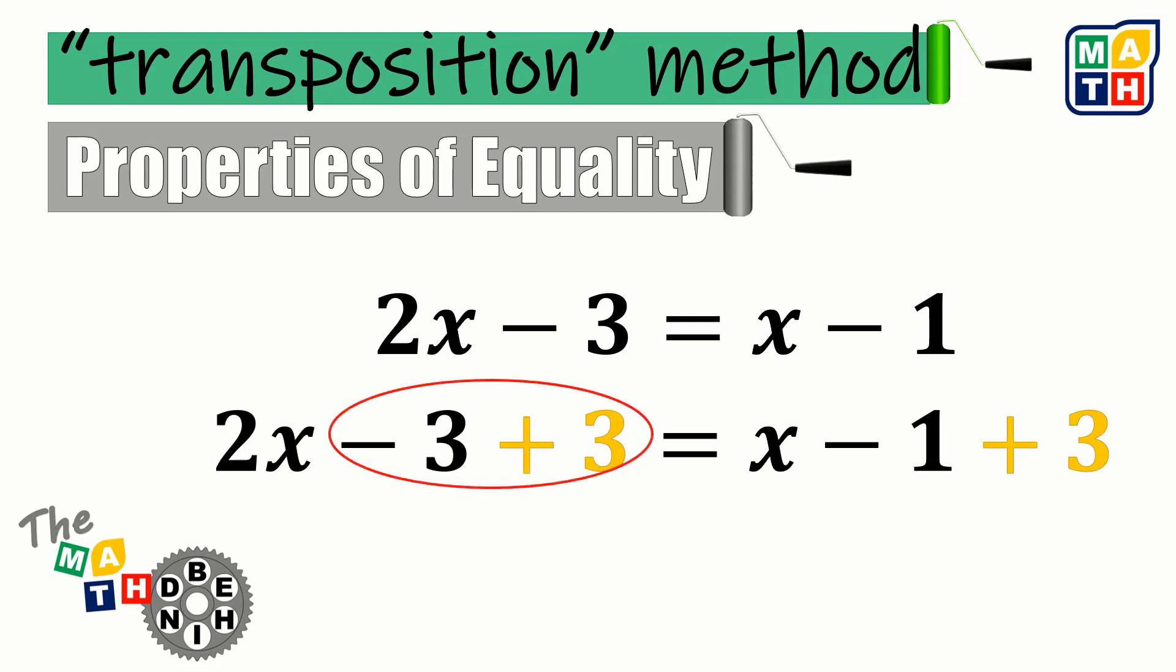With this, we can simplify minus 3 plus 3 on the left-hand side of the equation into 0. For this moment, let us just leave, in the meantime, the constants that could be found on the right-hand side of the equation. And then, the next step should contain 2x is equal to x minus 1 plus 3.